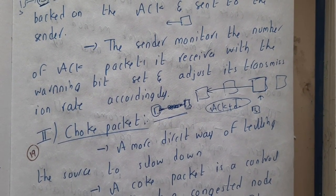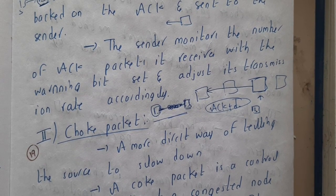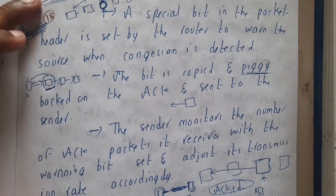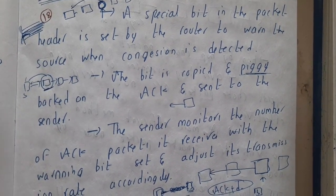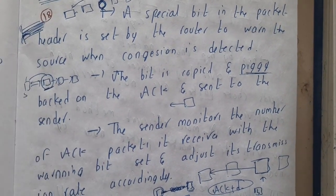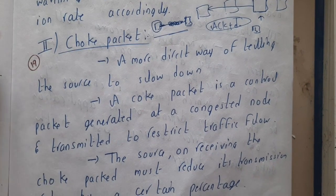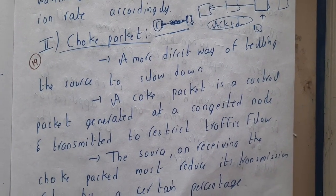If the warning bit is set to one, indicating congestion, the sender slows down its transmission. That is the logic behind the warning bit. In the next lecture, we'll be going through the choke packet. Thank you for watching.